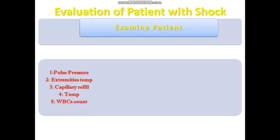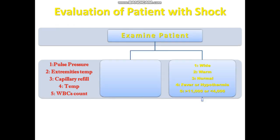We look at pulse pressure, extremities, temperature, capillary refill time, body temperature, and WBC count. If a patient has a wide pulse pressure, warm extremities, normal capillary refill time, and either has hyperthermia or hypothermia, and the TLC count is either more than 11,000 or less than 4,000 — what type of shock is this?